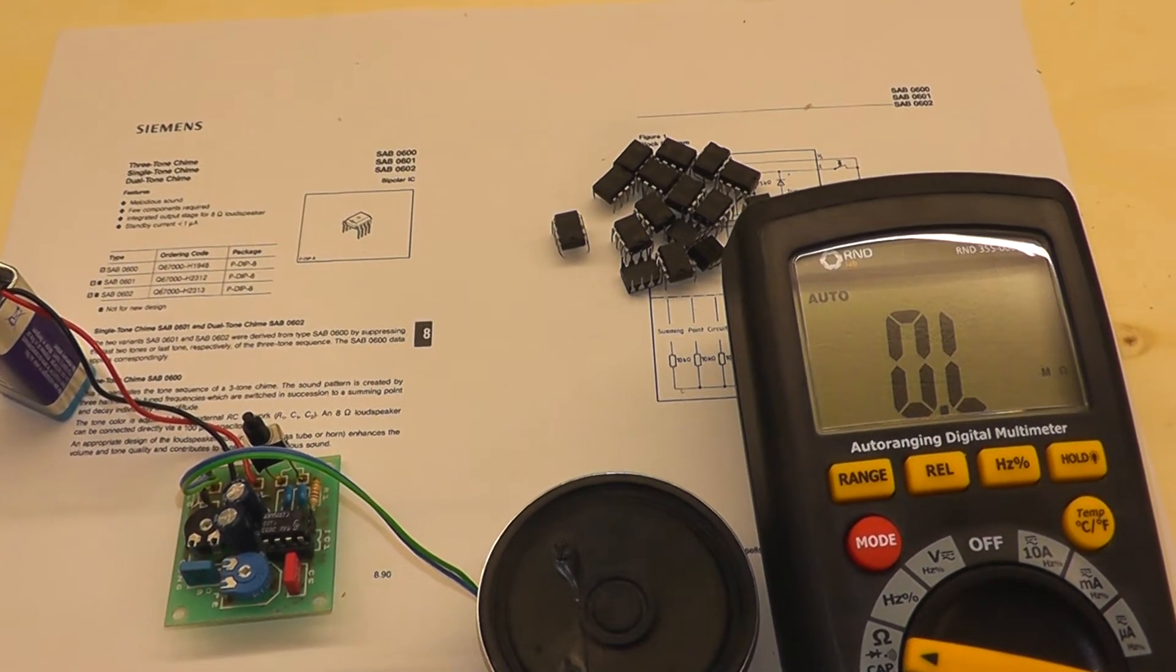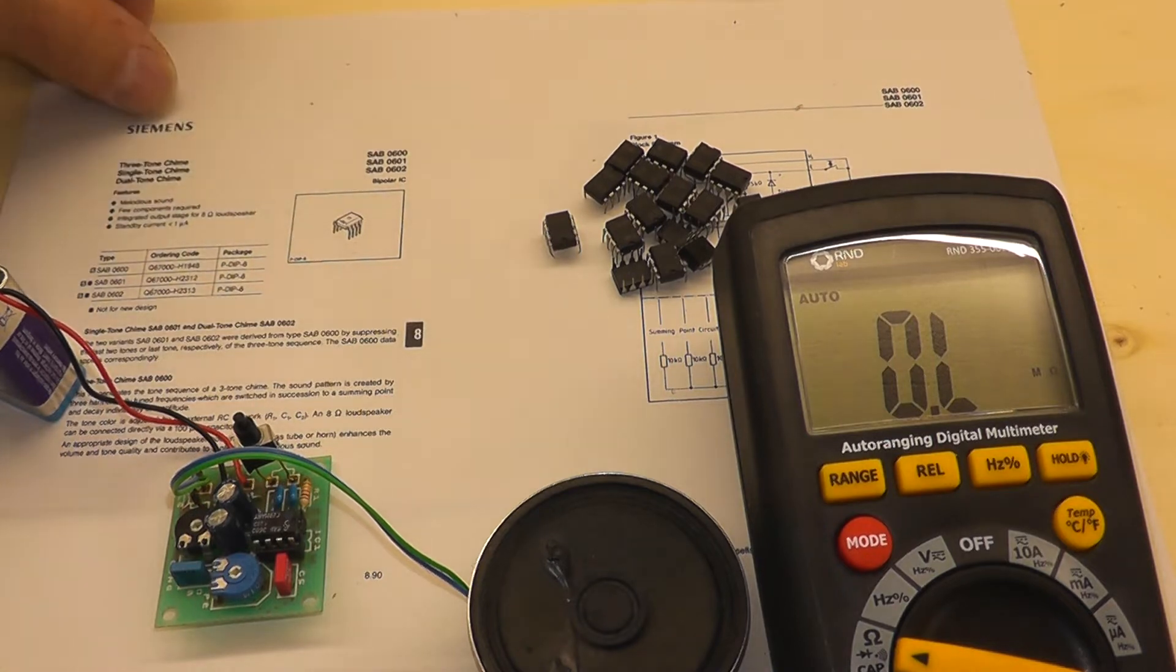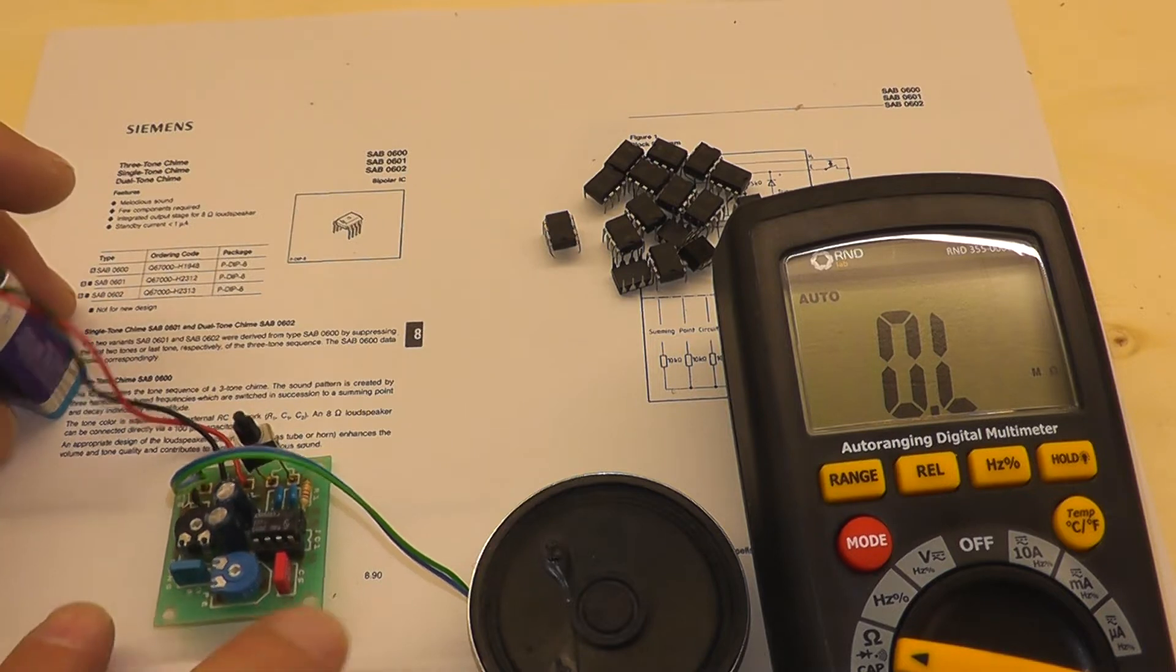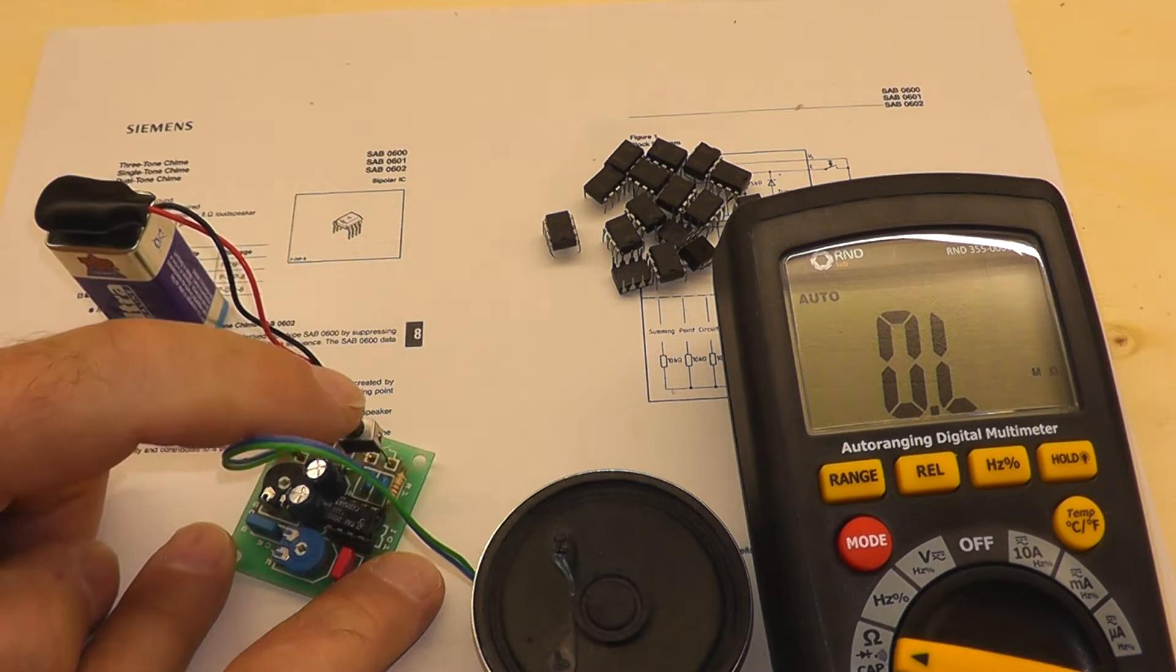Hello everyone and welcome to my YouTube channel. In this video I want to talk about the three-tone chime type SAB 0600 from Siemens. First of all, I want to show you how that works. Maybe some of you know this - it's for a doorbell. So I press here the button.